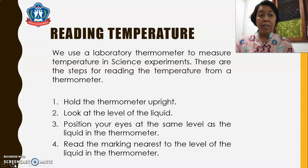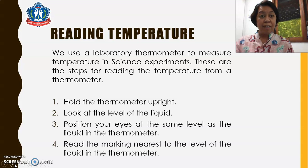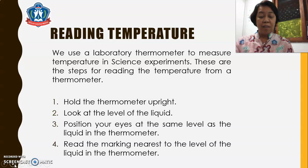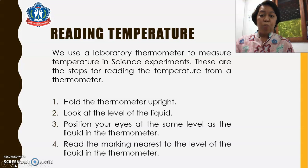How do we read a temperature? We use a laboratory thermometer to measure temperature in science experiments. These are the steps for reading the temperature from a thermometer. First, hold the thermometer upright. Second, look at the level of the liquid. Third, position your eyes at the same level as the liquid in the thermometer. And last, read the marking nearest to the level of the liquid in the thermometer.